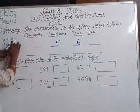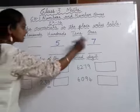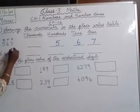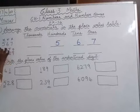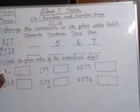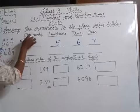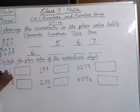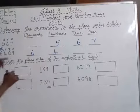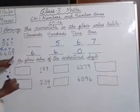7 is in ones place. Is it clear? Next, 6409. We write ones, tens, hundreds, thousands. 6 is in thousands place, 4 is in hundreds place, 0 is in tens place, and 9 is in ones place.